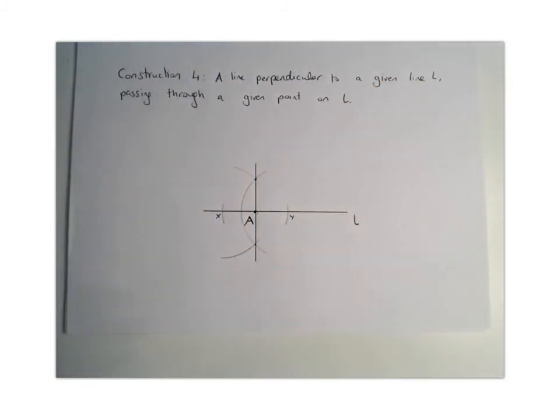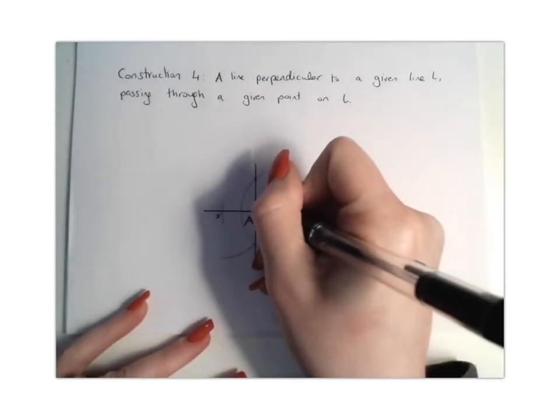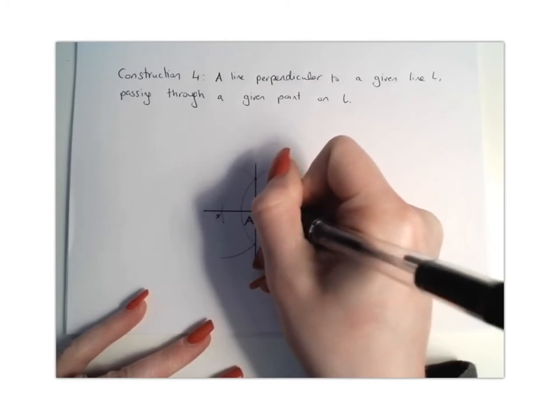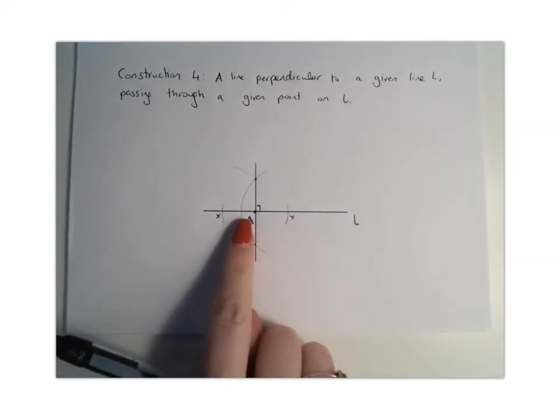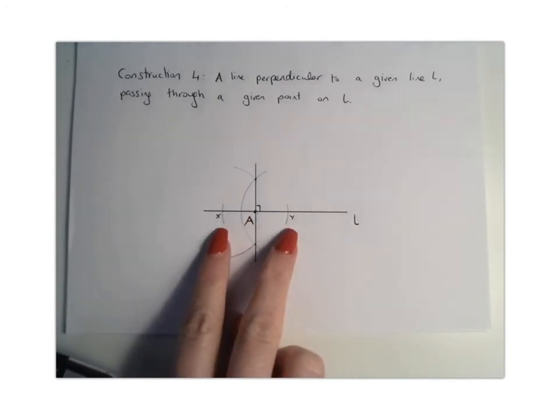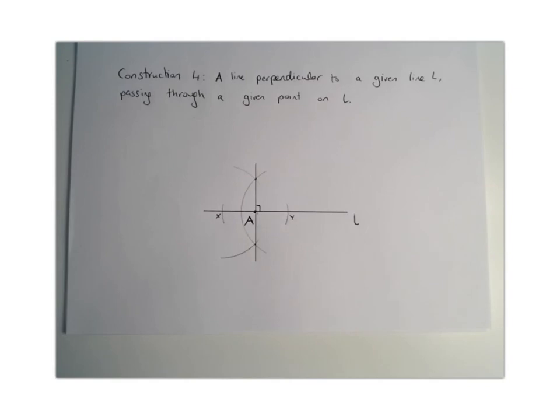What we have found is the perpendicular line that's going through that point A. While this was not the perpendicular bisector of a line, what we did was we created two points on our line, which then we found the perpendicular bisector of. Therefore, this line here represents the perpendicular line through the point A on line L.